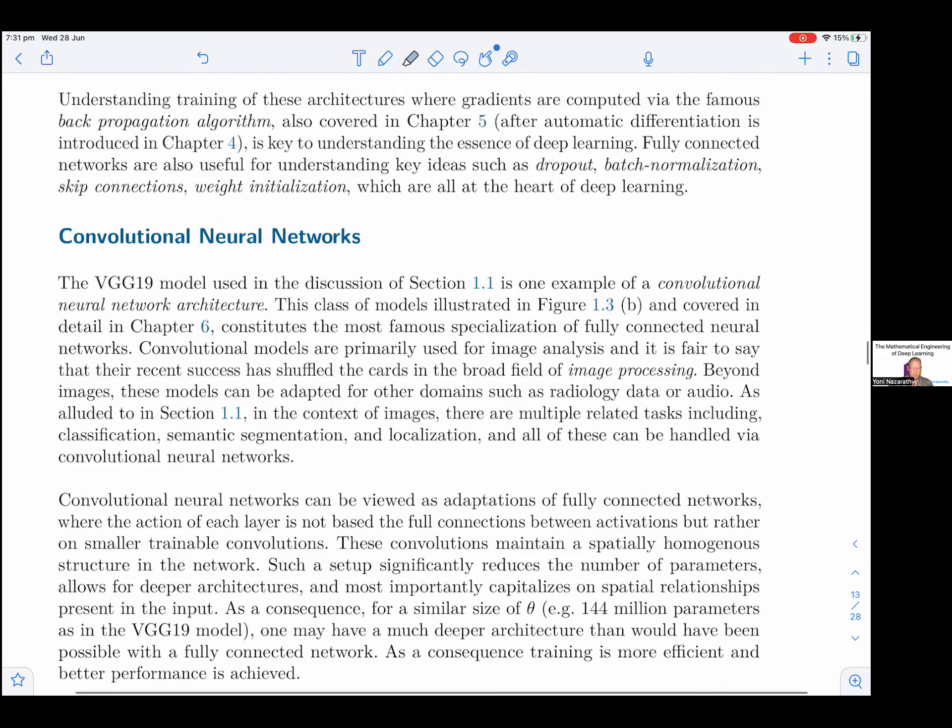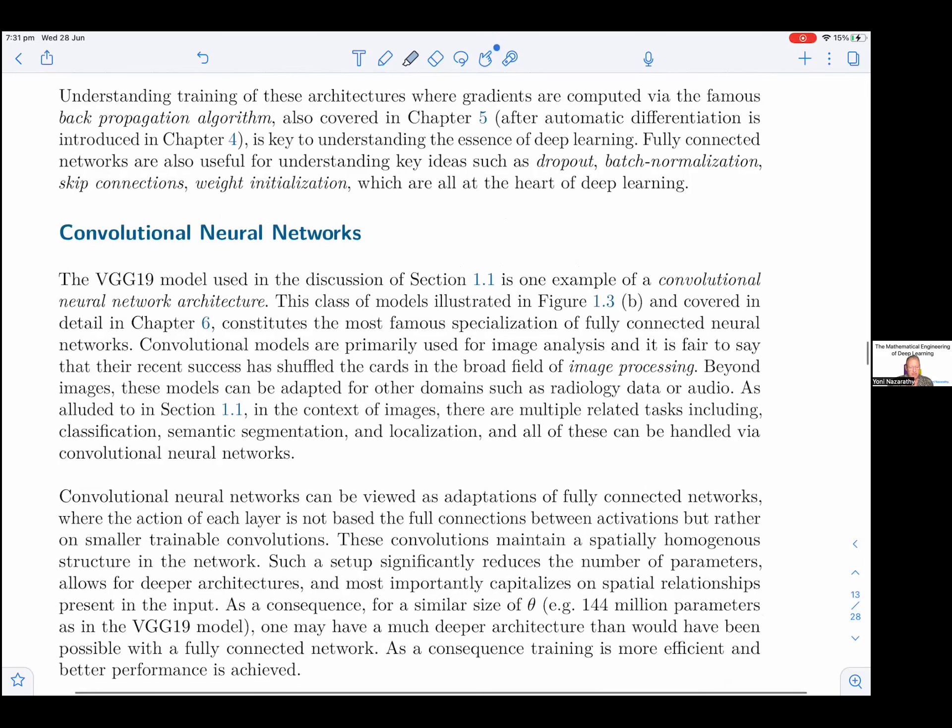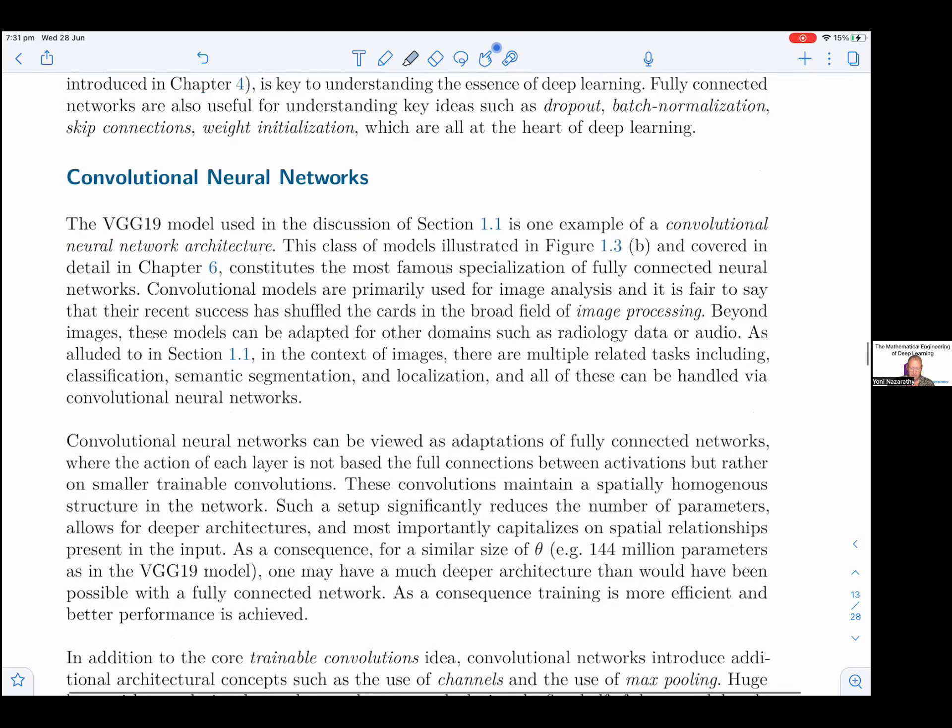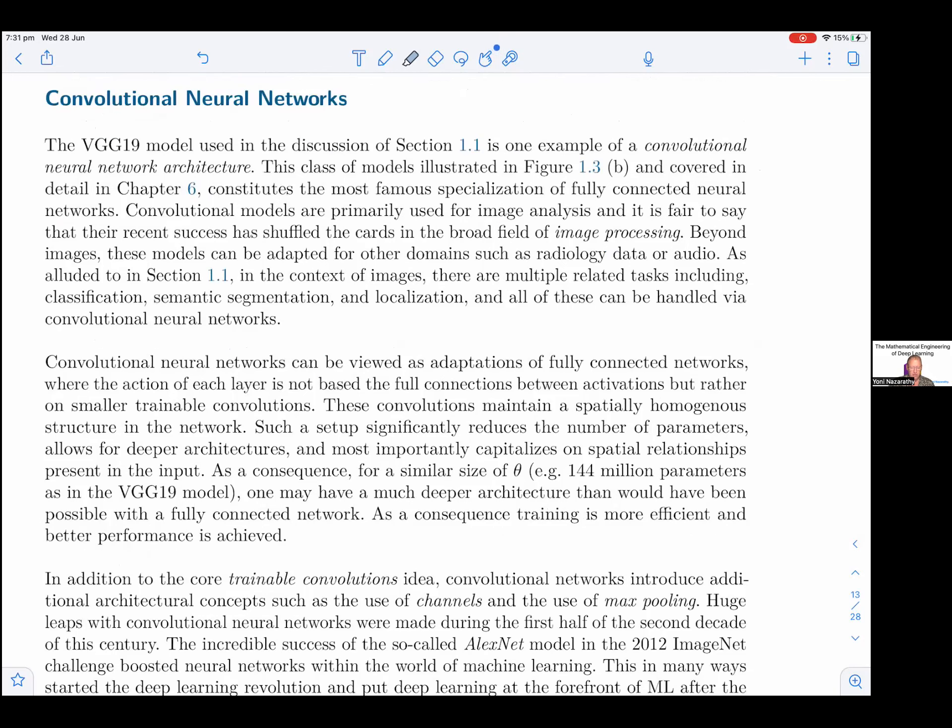Convolutional neural networks. The VGG19 model used in the discussion of Section 1.1 is one example of a convolutional neural network architecture. This class of models illustrated in Figure 1.3b and covered in detail in Chapter 6 constitutes the most famous specialization of fully connected neural networks. Convolutional models are primarily used for image analysis, and it is fair to say that the recent success has shuffled the cards in the broad field of image processing.